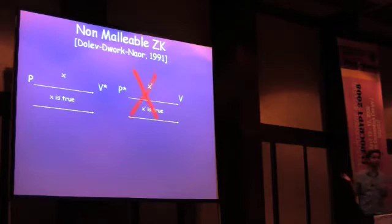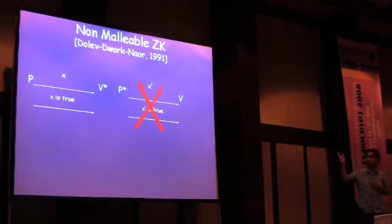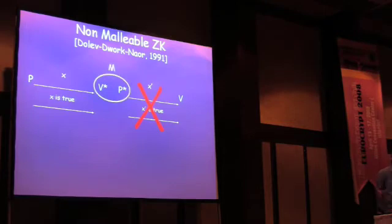So, this is a situation we want to prevent in a non-malleable approach prover. And we do this by requiring that there exists a simulator S, which can be used instead of prover P to do the same thing that this guy was doing.